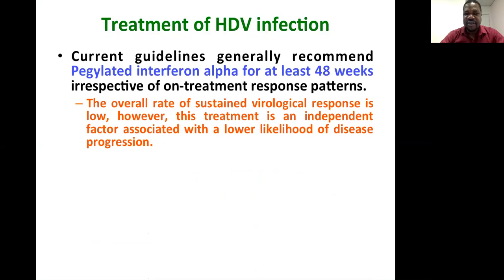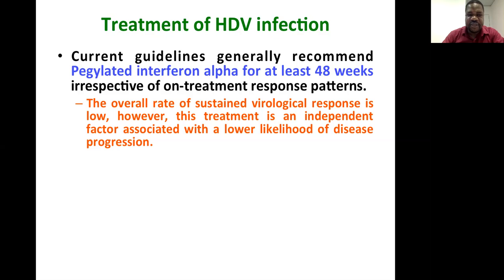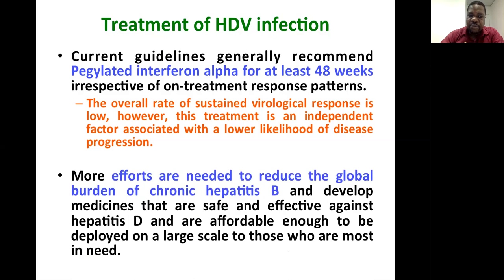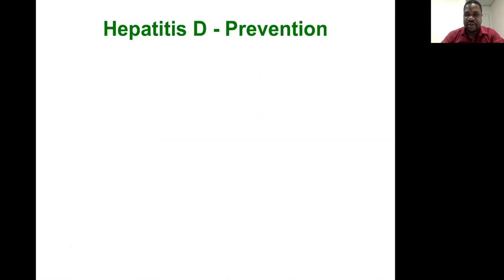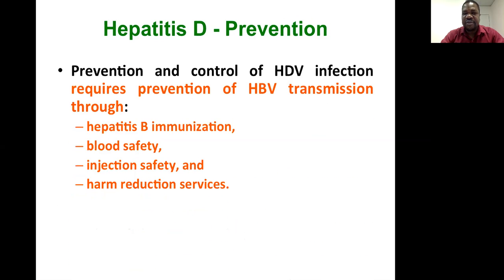For treatment, current guidelines generally recommend pegylated interferon alpha for at least 48 weeks, irrespective of on-treatment response patterns. The overall rate of sustained virological response is low; however, this treatment is an independent factor associated with a lower likelihood of disease progression. More efforts are needed to reduce the global burden of chronic hepatitis B, which in turn will reduce hepatitis D. Prevention and control of hepatitis D infection requires prevention of hepatitis B transmission through vaccination, blood safety, injection safety, and harm reduction services.